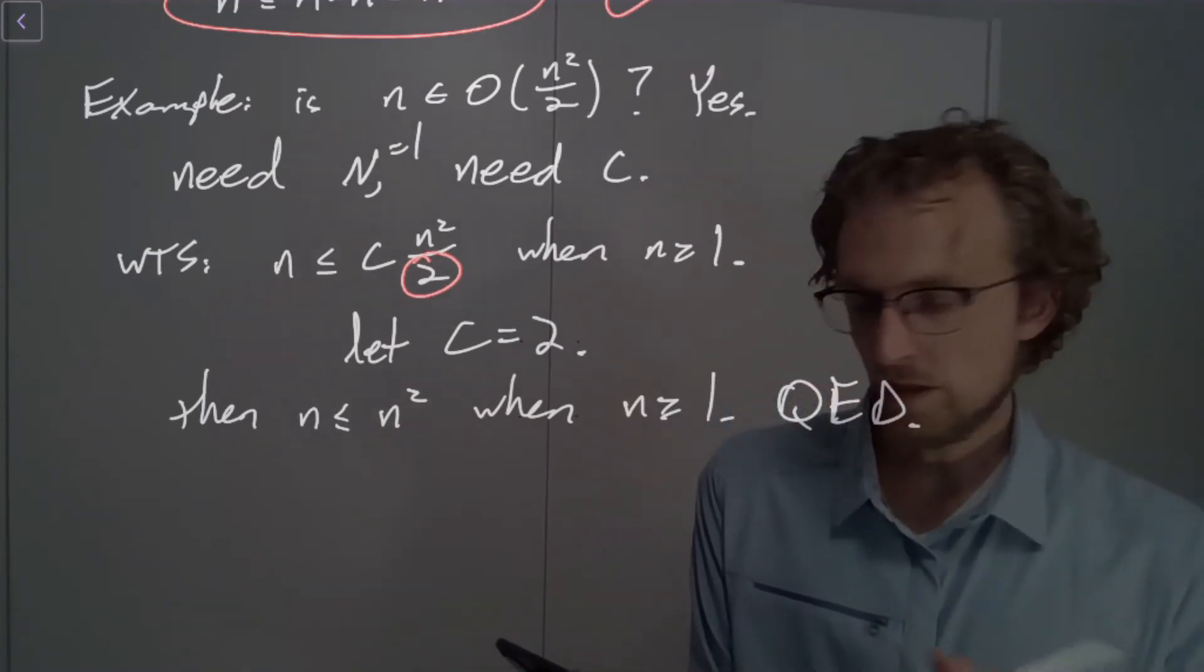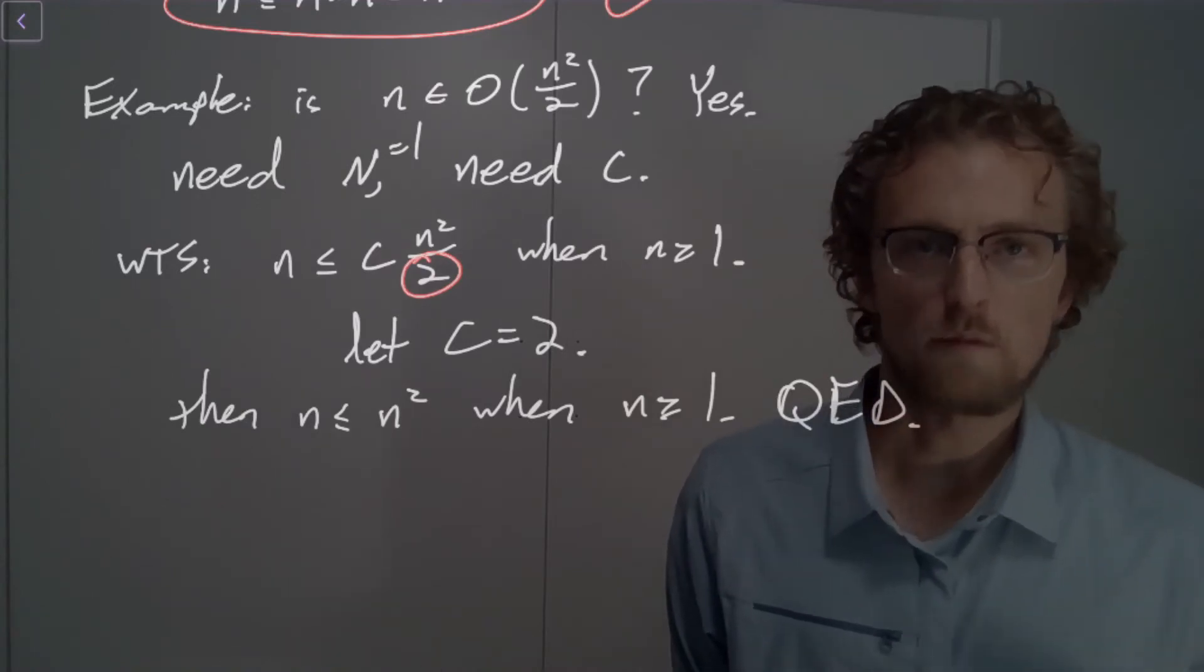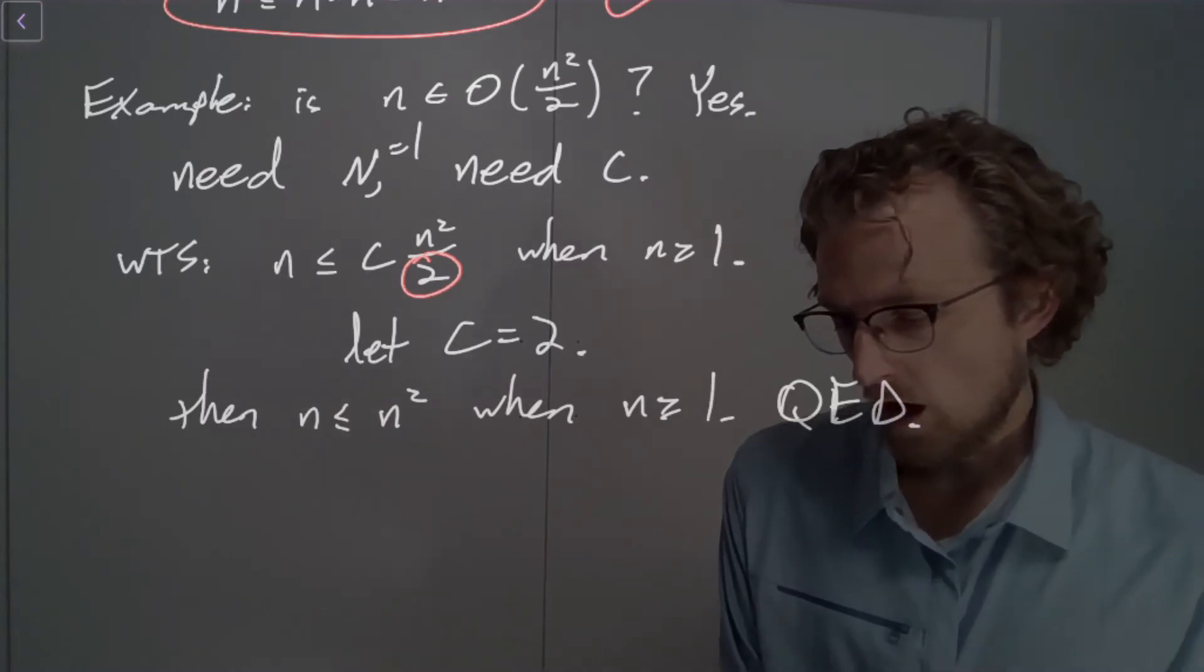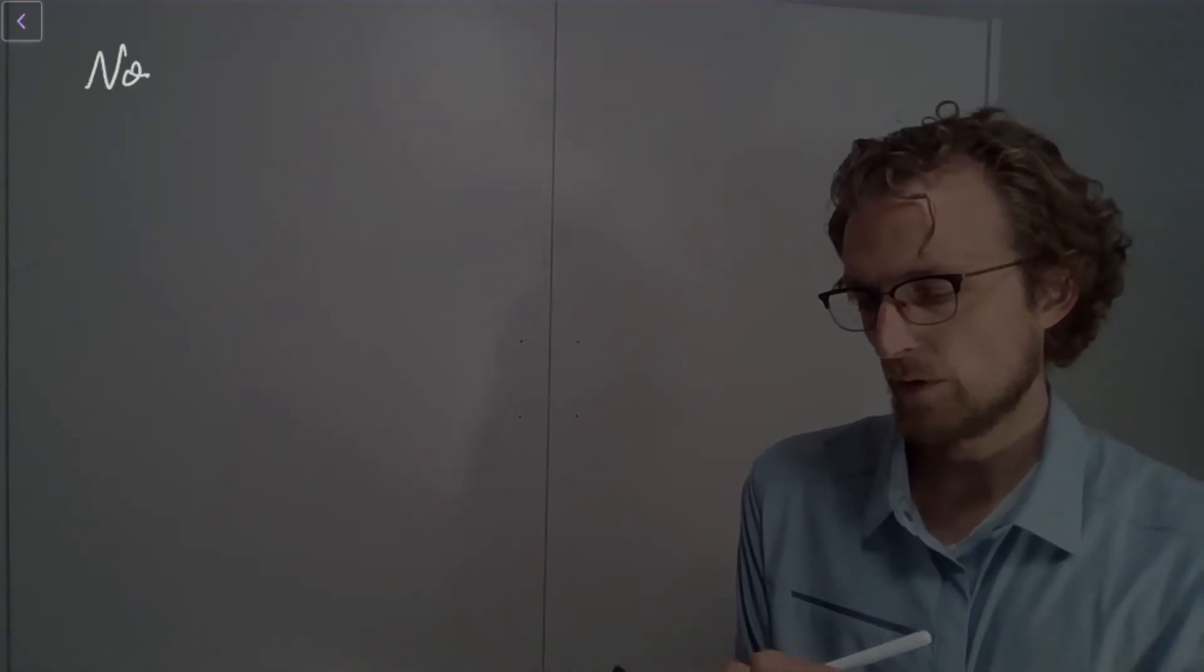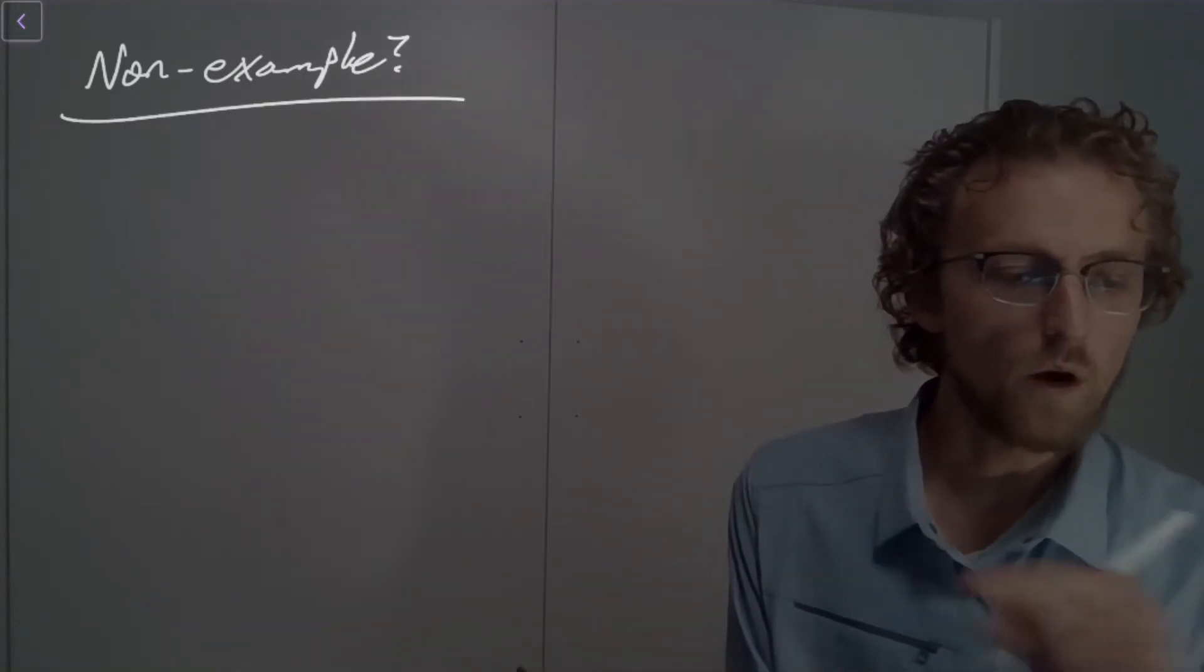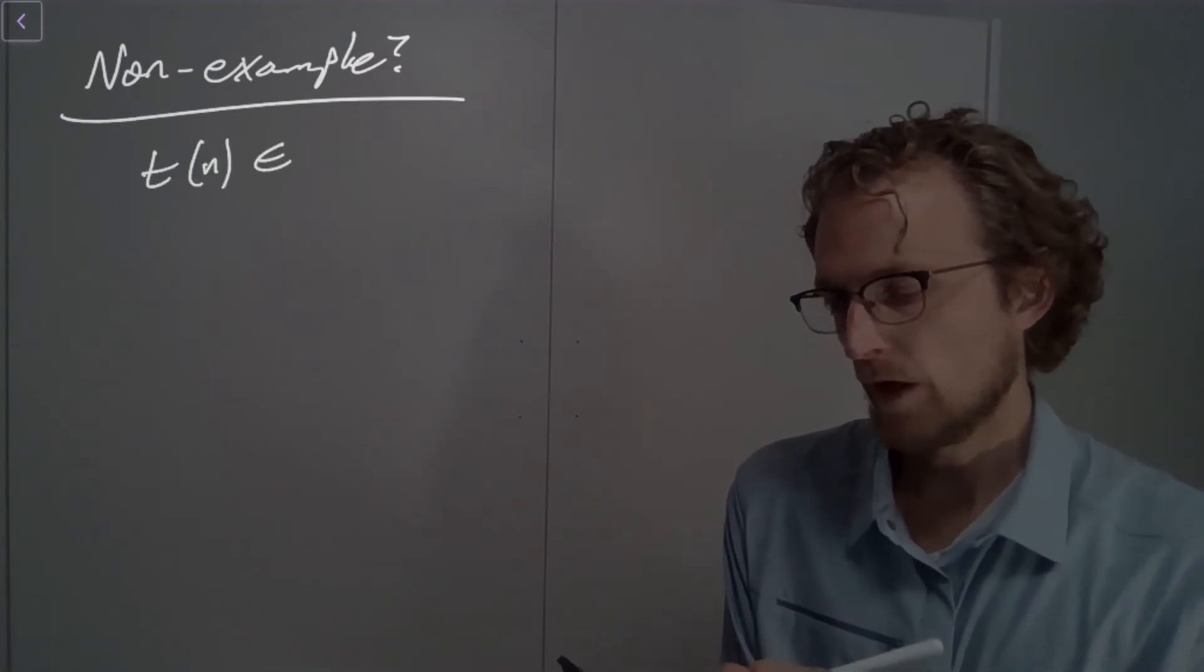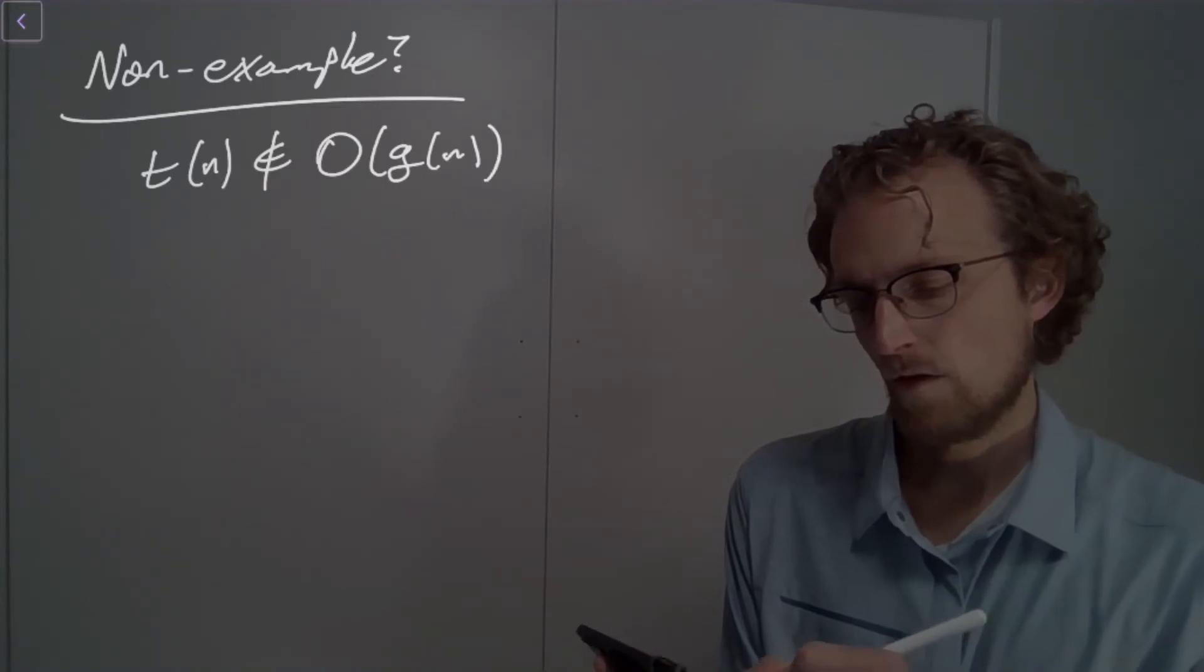And there's an example in the typeset notes where we ask the question, what about 10n? And the answer ends up being the same. And there's a couple ways of going about it, but you can get to the same place. All right. So what if, what does it mean, then, if the answer's no? Okay. So what would a non-example look like? Well, let's think very carefully about what it would mean to say t of n is not big O of g of n.